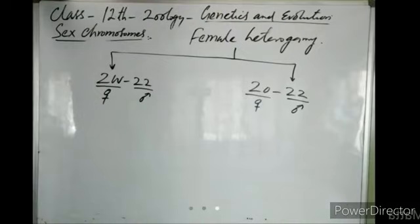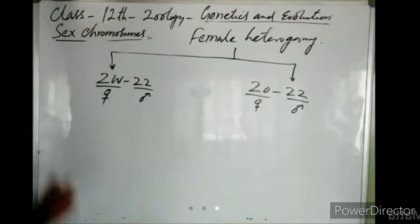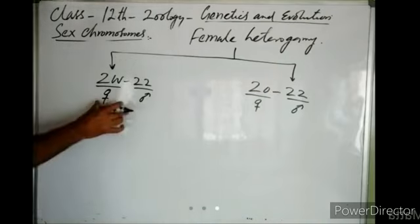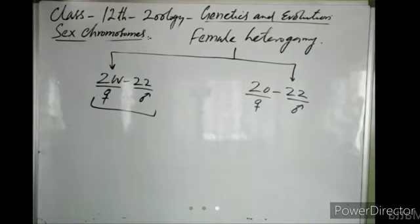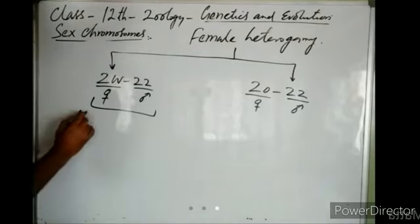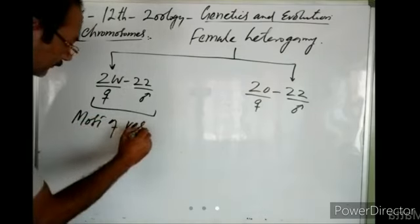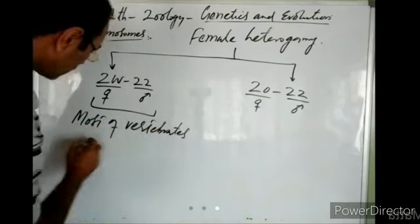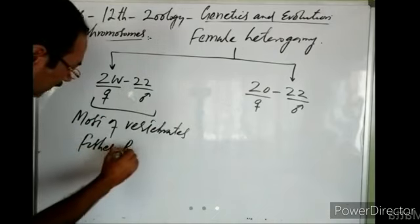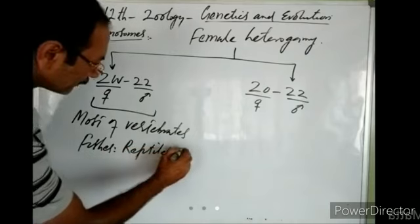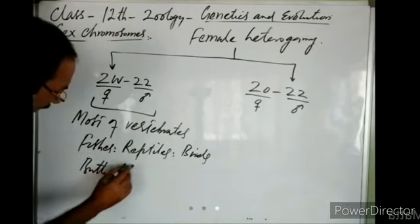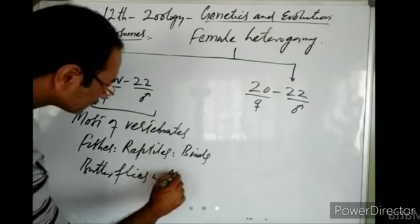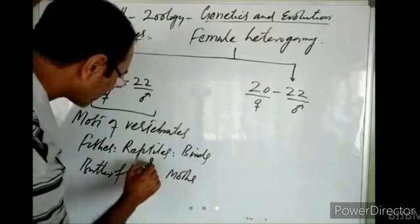In both cases, males are homomorphic and homogametic for their sex chromosome, and it is the female which is different. The ZW/ZZ condition is found in most vertebrates — fishes, birds, reptiles — and also in some butterflies and moths.